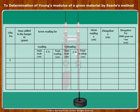Observation number 1: mass m equal to 0, as there is no weight added to the hanger. Main scale reading is 0.1 centimeter, circular scale reading CS is 71, giving a total reading of 0.0171.